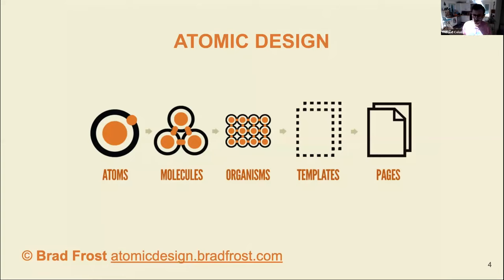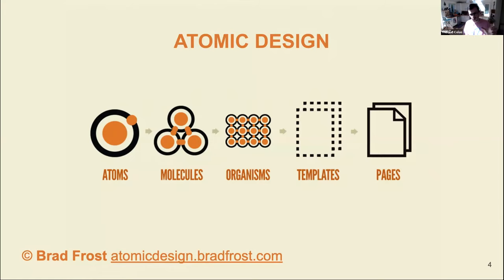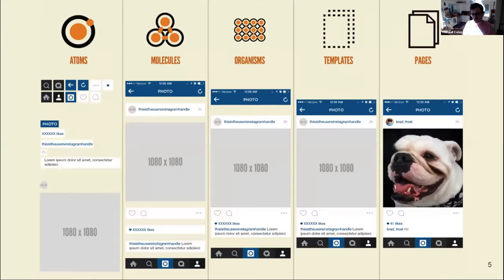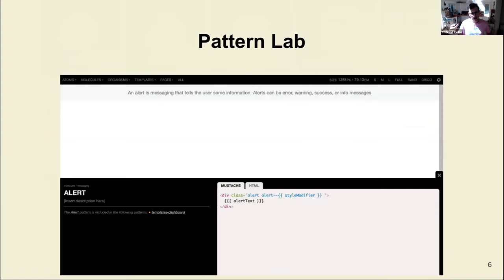For us at Torchbox, this really all started with atomic design from Brad Frost, which has been around for nearly 10 years now. Atomic design is an approach to building web pages where you start from quite fundamental, small components and then use these to build bigger building blocks — molecules, organisms, templates, and pages. This is how Torchbox used to work with a tool called PatternLab, which goes hand in hand with atomic design.